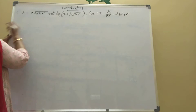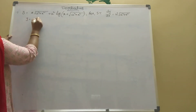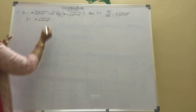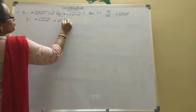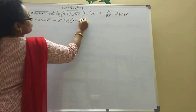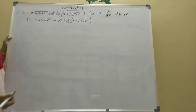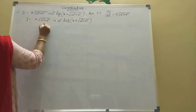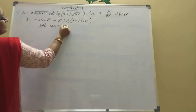Let's place it here. What is given here? y equal to x into root of a square plus x square, plus a square into log of x plus root of a square plus x square. Now, differentiation with respect to x.